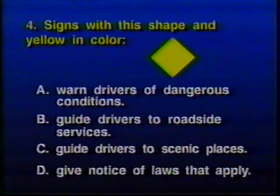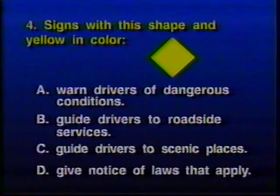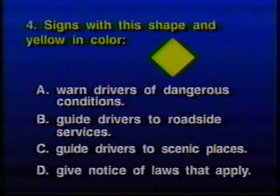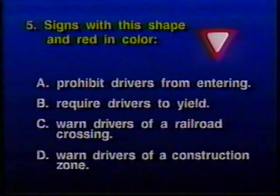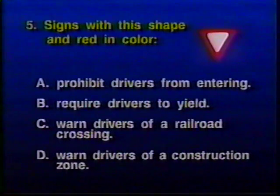Quiz question four: Signs with a diamond shape and yellow color — A) warn drivers of dangerous conditions, B) guide drivers to roadside services, C) guide drivers to scenic places, or D) give notice of laws that apply. Question five: Signs with a yield shape and red color — A) prohibit drivers from entering, B) require drivers to yield, C) warn drivers of a railroad crossing, or D) warn drivers of a construction zone.